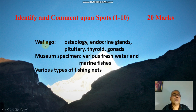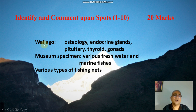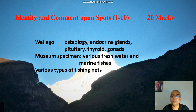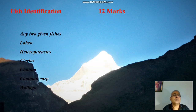For the spots, you have to write 10 spots and the marks allotted is 20 marks. For spots you have to prepare the osteology of Catla and different endocrine glands such as pituitary, thyroid, gonad, parathyroid. Similarly, museum specimens — various freshwater and marine fishes — may be put for writing your comments, and various types of fishing nets may also be put for spots. Two minutes will be given for each spot.